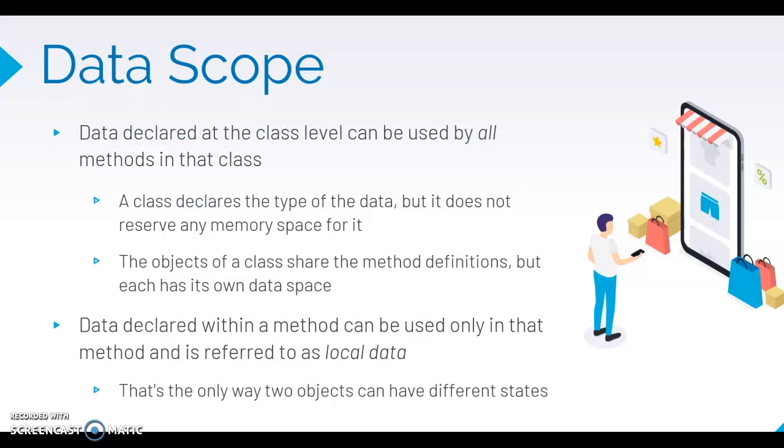The objects of a class share the method definitions, but each has its own data space. Data declared within a method can only be used in that method, and it's referred to as local data. That's the only way two objects, like a coin, could have different states.